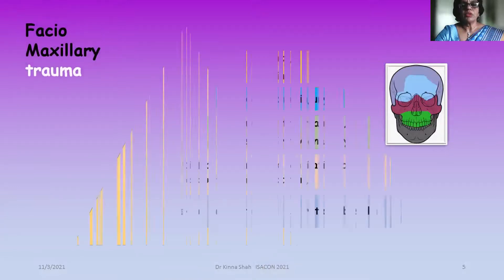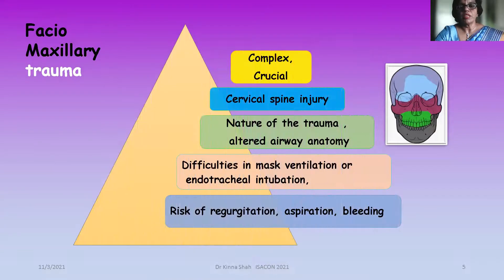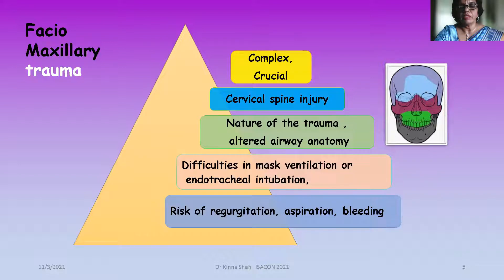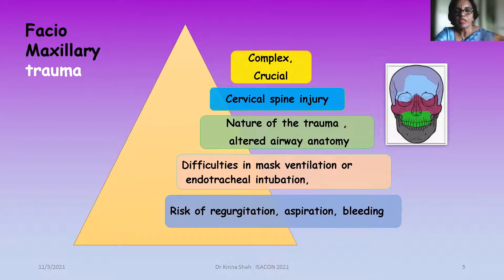Faciomaxillary trauma is a crucial and complex situation often associated with cervical spine injury. It mainly presents with altered airway anatomy, making it difficult for the anesthetist to perform mask ventilation and endotracheal intubation. The risk of regurgitation, aspiration, and bleeding may be present, as these are mainly emergency procedures.